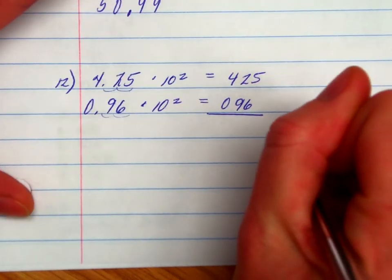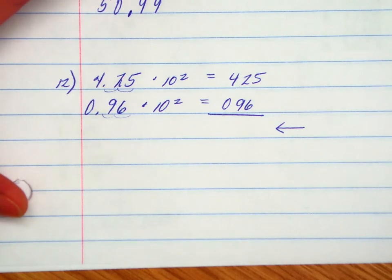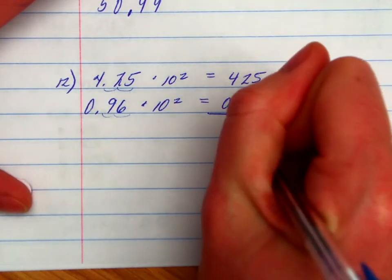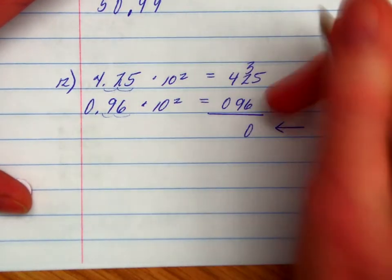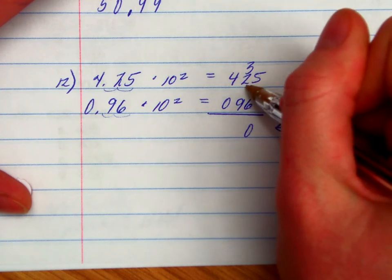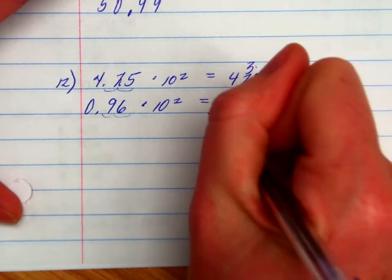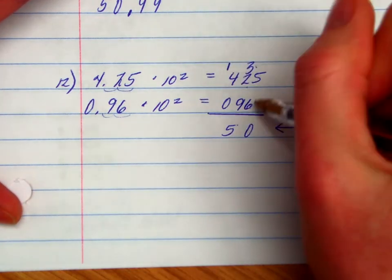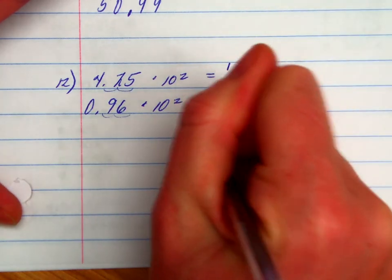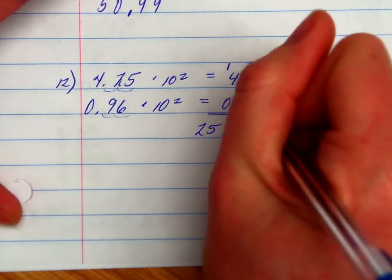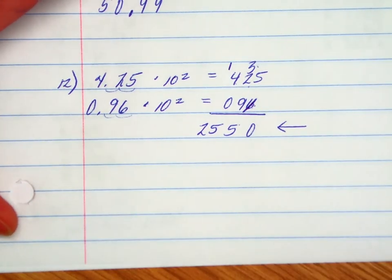I'm going to start in the ones place, which is going to give me the ones place partial product right here. 6 times 5 is 30, put down the 0, carry the 3. 6 times 2 is 12, plus 3 is 15, put down the 5, carry the 1. 6 times 4 is 24, plus 1 is 25.